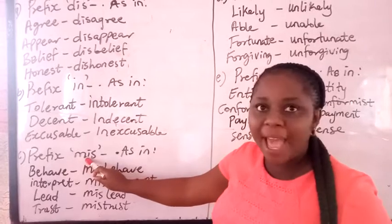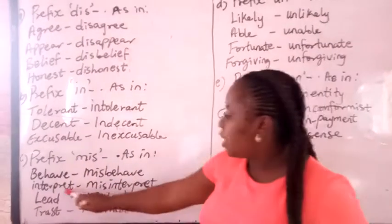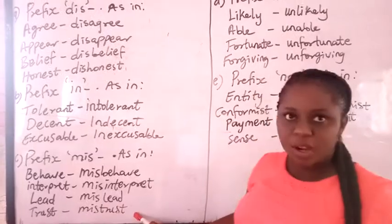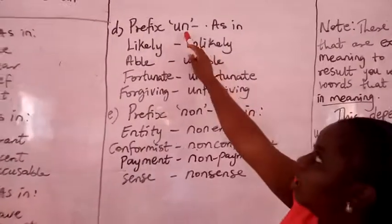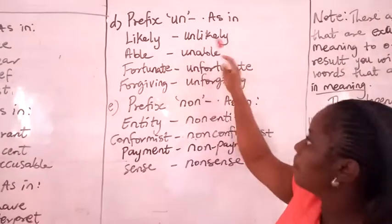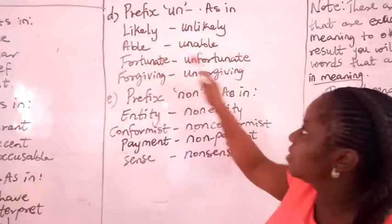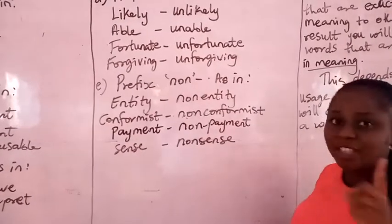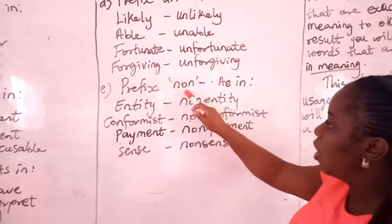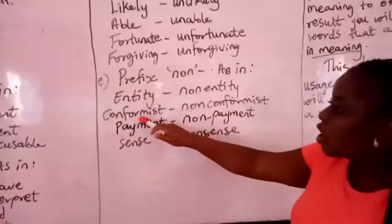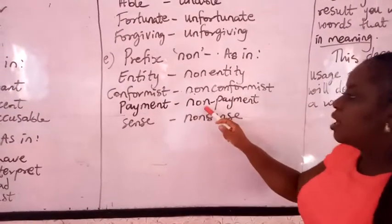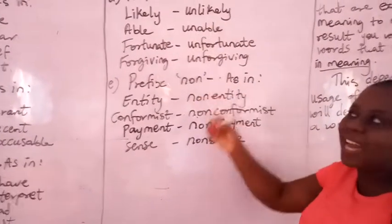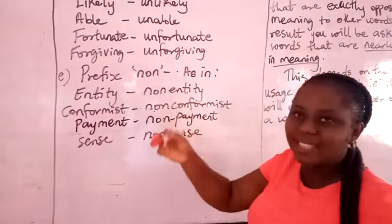The next prefix is "mis-" (M-I-S): behave/misbehave, interpret/misinterpret, lead/mislead, trust/mistrust. Then we have "un-": likely/unlikely, able/unable, fortunate/unfortunate, forgiven/unforgiven. The last prefix listed here is "non-": entity/non-entity, conformist/non-conformist, payment/non-payment, sense/nonsense. These prefixes are added to words, making them the opposite of that same word.